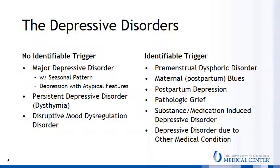Most depressive disorders present with no clearly identifiable trigger. These include major depressive disorder, persistent depressive disorder — which is often referred to as dysthymia — and disruptive mood dysregulation disorder. In addition, there are depressive disorders with similar symptomatology but with a more clearly identifiable trigger, which will be described in Module 4.